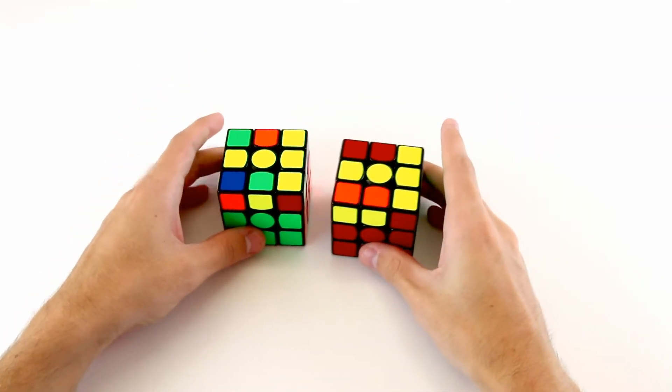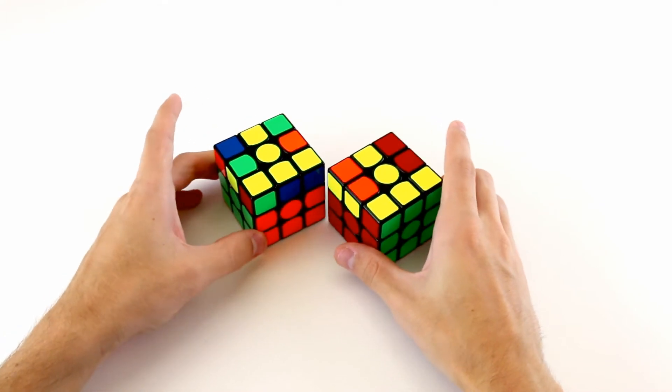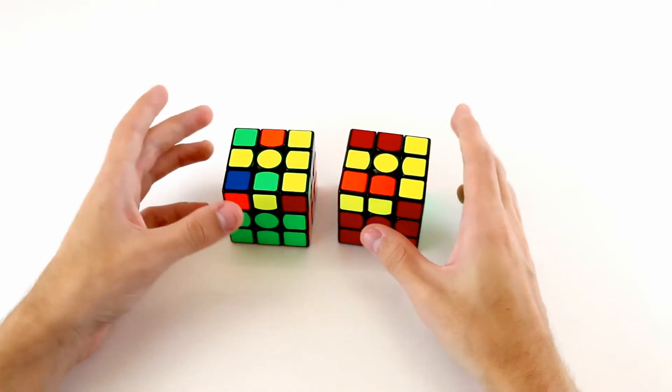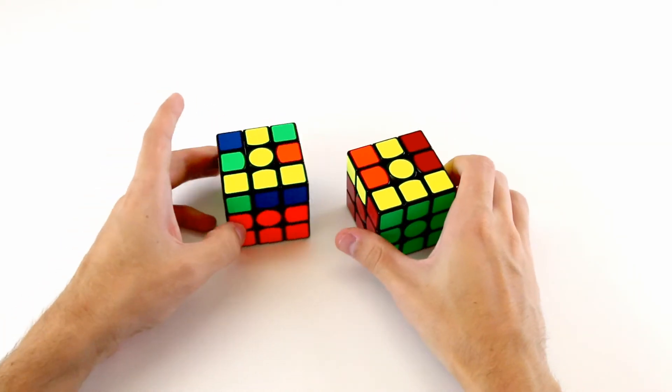One thing that will come in handy is to learn how OLL algorithms affect certain blocks of pieces around the cube, or more specifically, which OLL algorithms don't break up blocks of pieces around the cube.